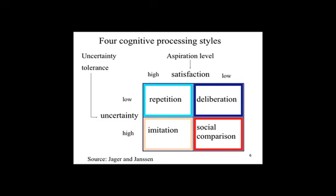When an agent is uncertain, it does not know whether it made the right decision and will look at what others do. An uncertain agent that is satisfied will imitate the decisions of the majority of others — by conforming to the decisions of others, the agent will reduce its uncertainty. An uncertain agent that is not satisfied will look at the decisions made by agents similar to her and see which choice works out best. This is social comparison.